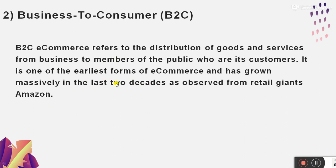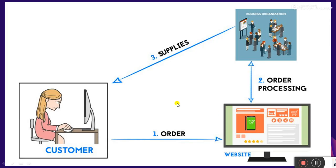In the B2C model, the two entities are business and consumer. If a business distributes goods and services to customers, we call it the business-to-consumer model. This diagram makes it clear: there is a customer, a business organization, and a website. First of all, if you have to buy a phone electronically, you have to go to the website and place an order.